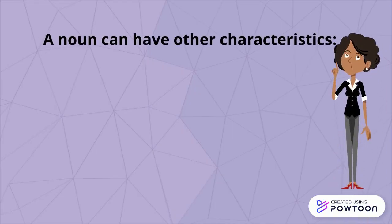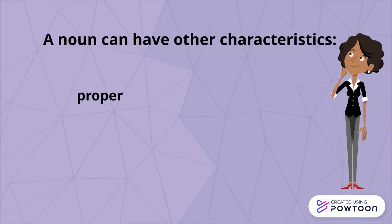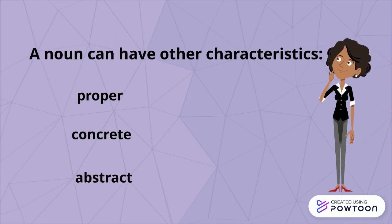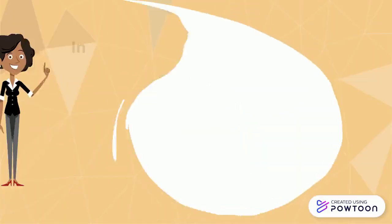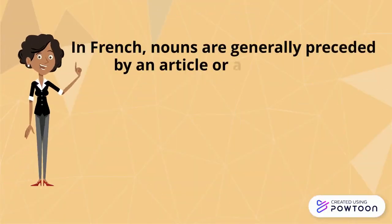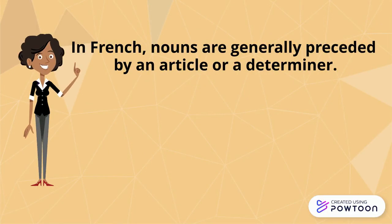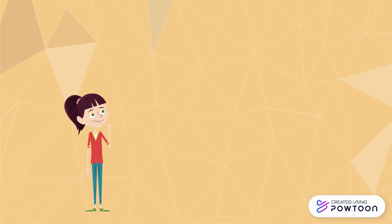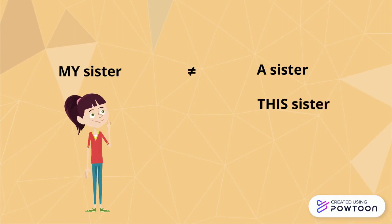A noun can have other characteristics such as being proper — for instance, referring to people or countries — concrete or abstract, collective, or countable or uncountable. In French, nouns are generally preceded by an article or a determiner. These words restrict their meaning. For instance, in English, 'my sister' is not the same as 'a sister' or 'this sister' or 'your sister,' although the concept of sisters is the same in all these phrases.